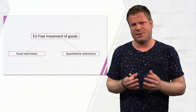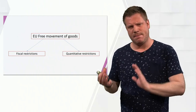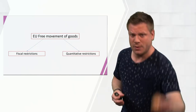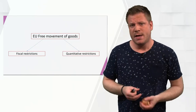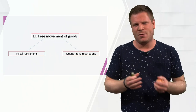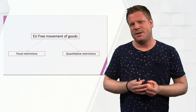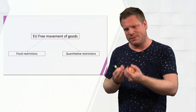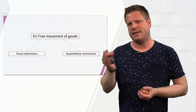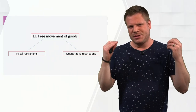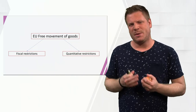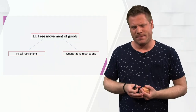For instance, you can only import 50 pieces of onions. So it does not relate to taxation or money, but it relates to the quota — the amount of products you can sell in a given country. Those two restrictions to trade we want to get rid of within the European Union.